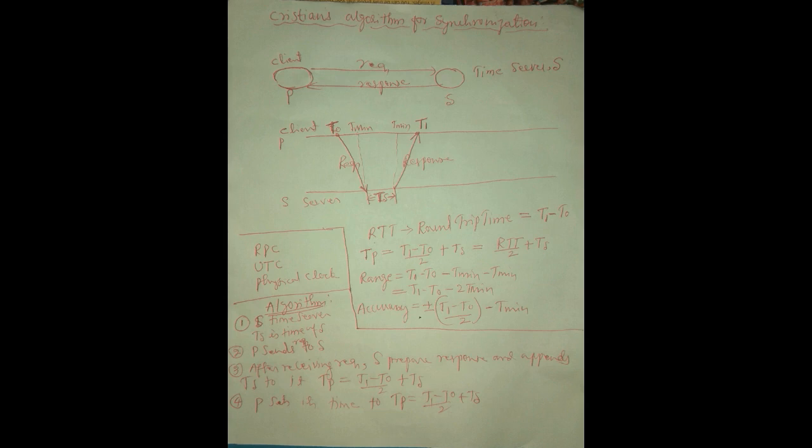The client, which does not have a perfect time, takes the correct time from the server. When the server sends back the time, it must include its ts value — that is, you add ts to (t1 - t0) / 2. ts represents how much time the server spent preparing the response.